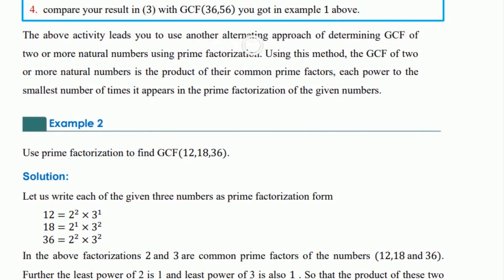Another approach for determining the greatest common factor of two or more natural numbers is by using the prime factorization method. Using this method, the greatest common factor of two or more natural numbers is the product of the common prime factors.